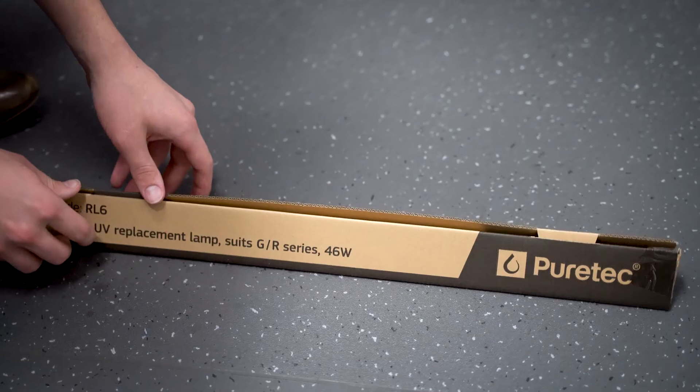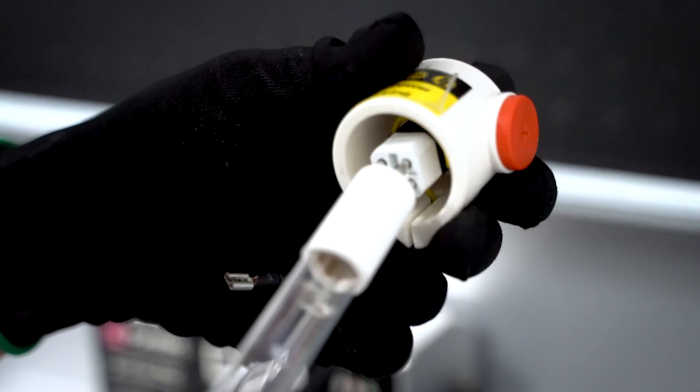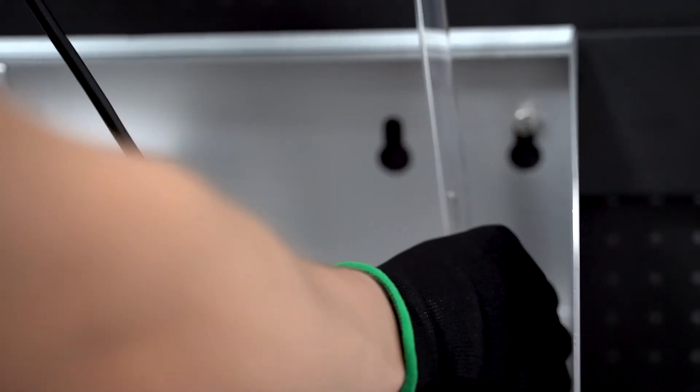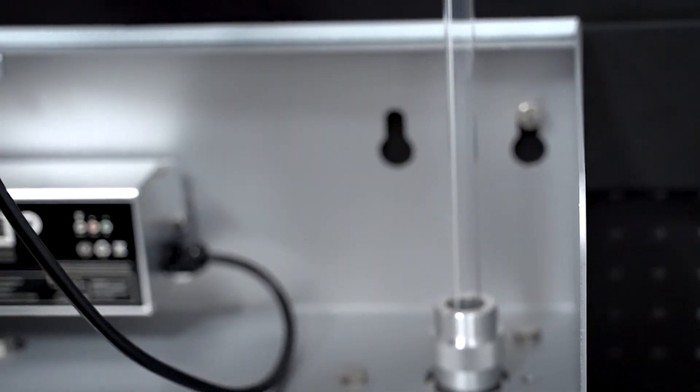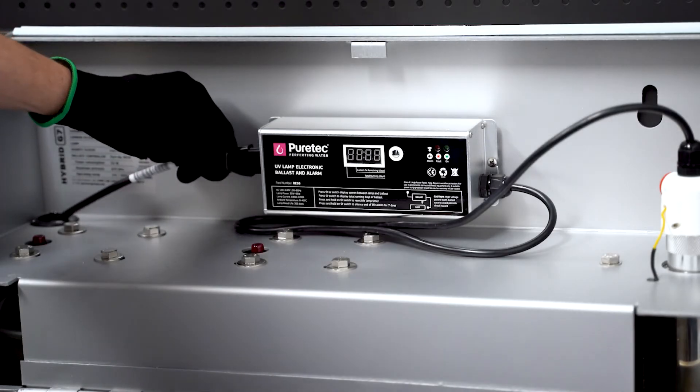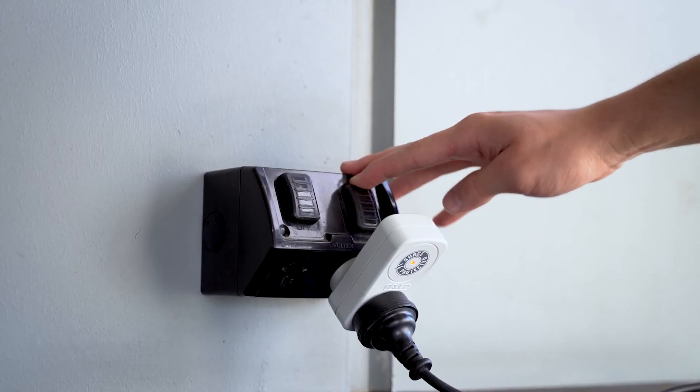To install the new lamp, remove it from its packaging. Then connect the four pins on the end of the lamp to the socket in the white cap. Slowly insert the UV lamp into the top of the chamber. Connect the earthing wire to the chamber, plug in the ballast power connector, and turn the power on.